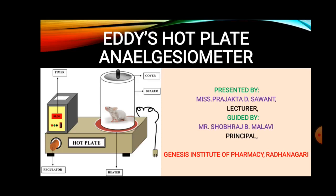Because of the COVID pandemic, you can't perform the practicals in the actual laboratory, so you just know the theory behind the practical. Today in this video, I am going to explain about the ED's hot plate analgesiometer, the instrument most commonly used in pharmacological research to detect the effect of analgesic drugs on animals.